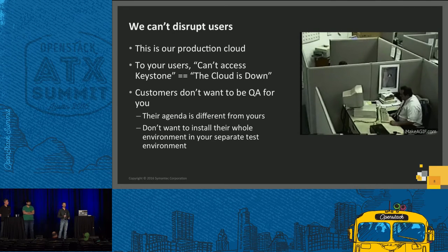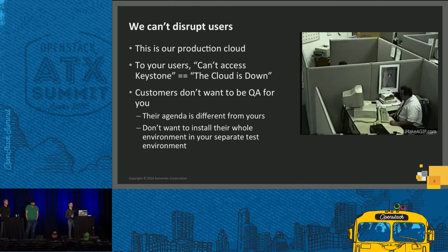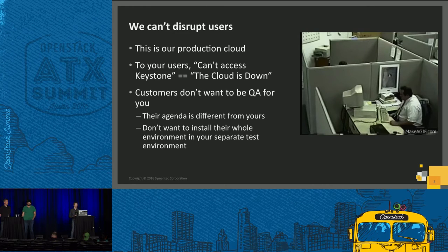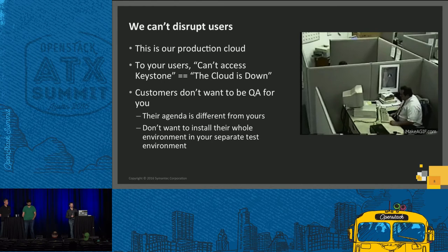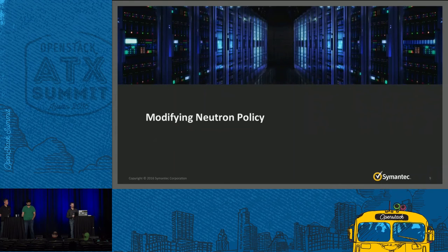Your customers don't want to be QA for you. If you have a test environment and you make your RBAC changes there and want customers to test them out, that's not going to work well — they have other priorities and testing your RBAC changes is not high on their list. So we need ways to ensure we secure the cloud without complete testing from our users and without breaking what they're currently doing. I'll now turn it over to Karthik to get into some details.